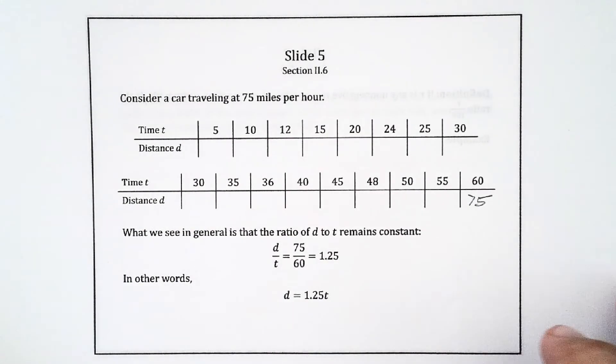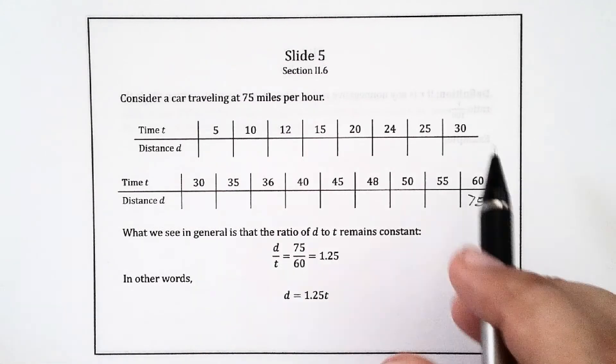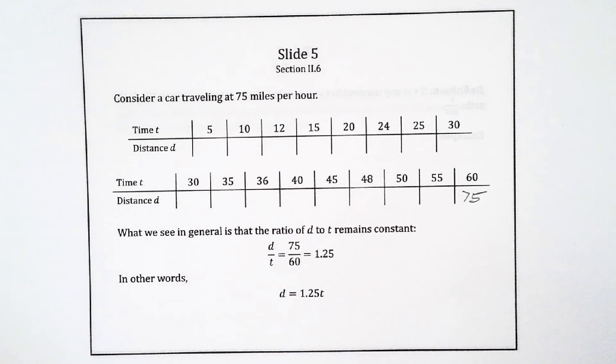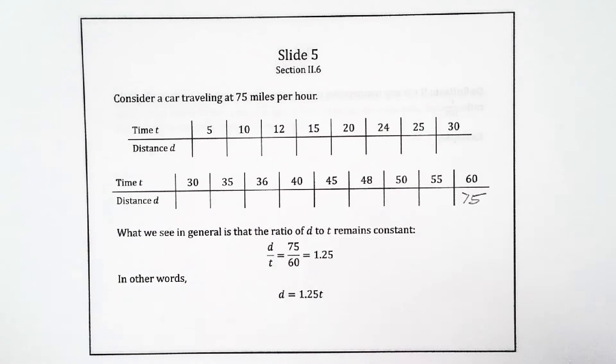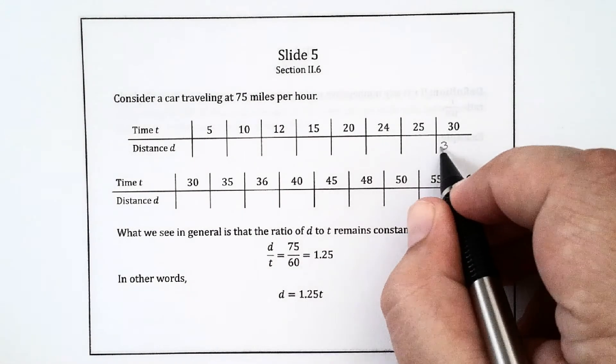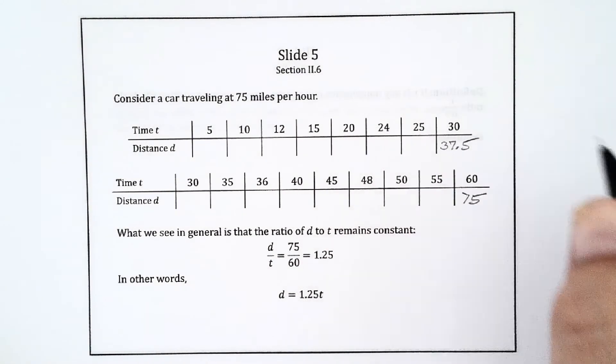Okay, so that was kind of easy. Half of that would be 30 minutes. So in 30 minutes, you're going to have gone half of 75 miles, and what's that? 37.5 miles. So that's how far you've gone in half an hour, 30 minutes.